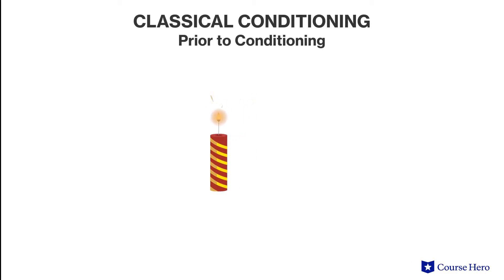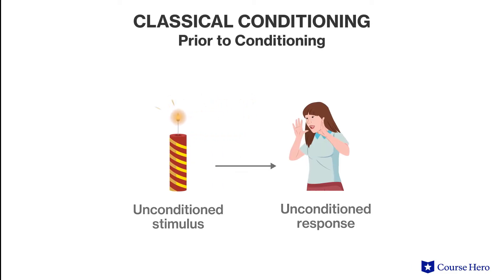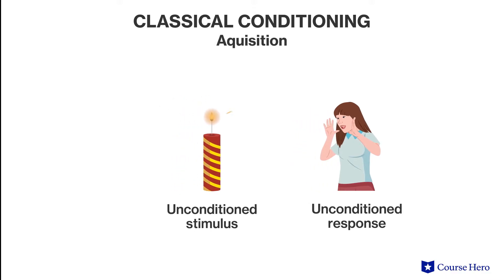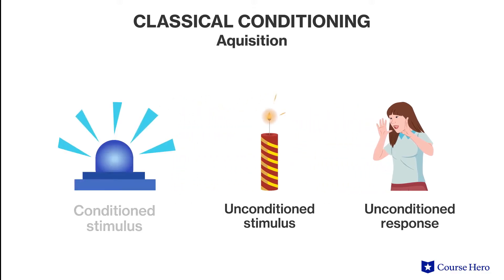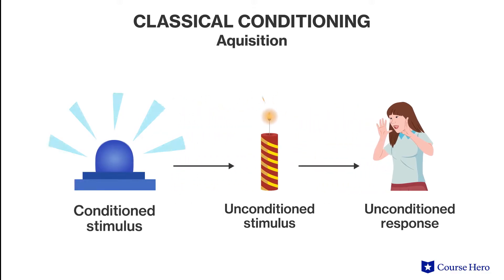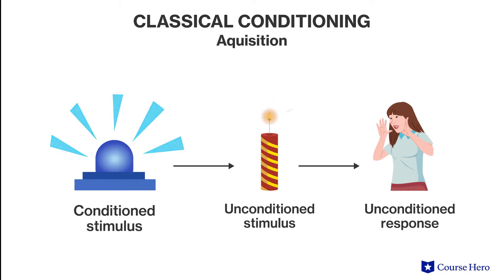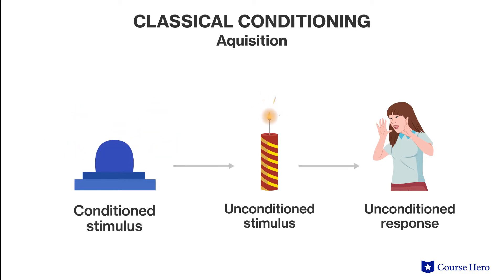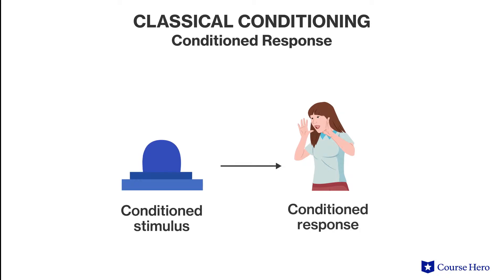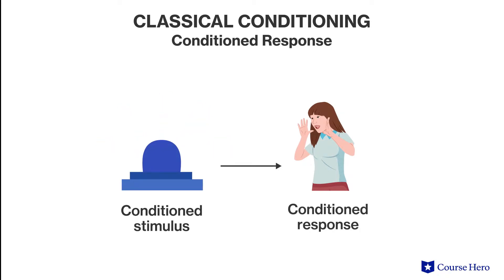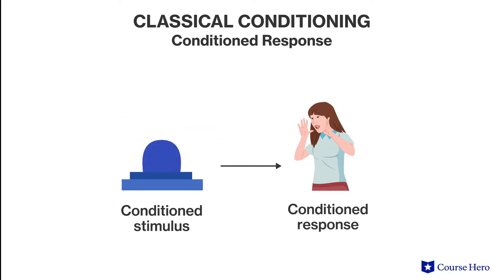For example, a loud noise elicits an involuntary startle response. If a neutral stimulus, such as a flashing light, is repeatedly presented just before the sound, the light alone will eventually come to elicit the startle response. In other words, the person will come to flinch at the flashing light because the brain has learned that it means an ear-splitting sound is imminent.